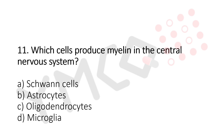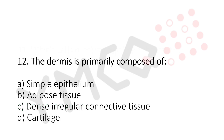Question 11: Which cell produces myelin in the central nervous system? Option A: Schwann cell. Option B: osteocyte. Option C: oligodendrocyte. Option D: microglia. The answer is Option C, oligodendrocyte.